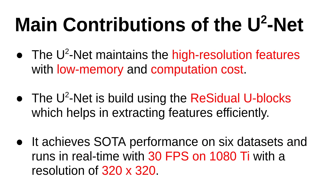Now, what are the main contributions of U²-Net? First, U²-Net maintains high resolution features with low memory and computation cost. Second, U²-Net is built using the residual U-block which helps in extracting features efficiently. Last, U²-Net achieves state-of-the-art performance on 6 datasets and runs in real time at 30 fps on a 1080 Ti with a resolution of 320×320.